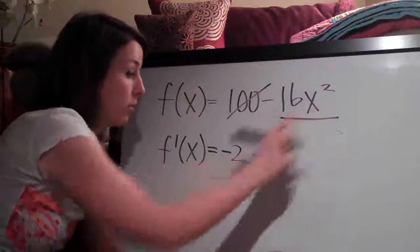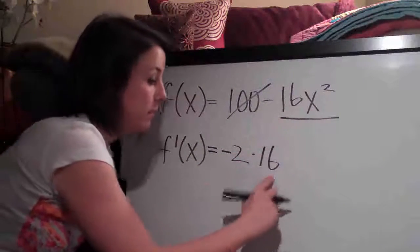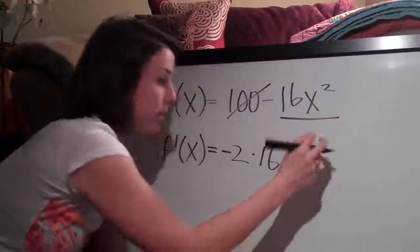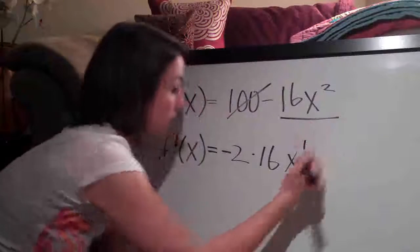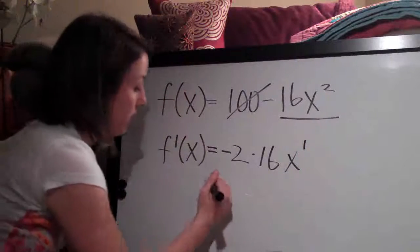And then the exponent times the coefficient, 2 times 16, the x we keep and we subtract 1 from the exponent. So 2 minus 1 is 1 and then we just simplify this.